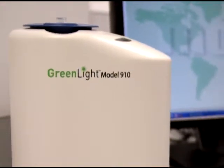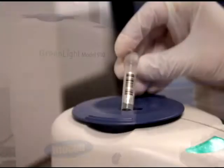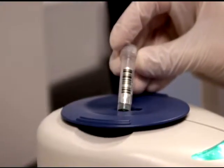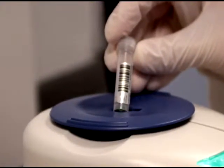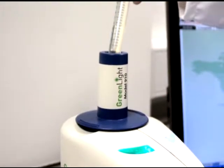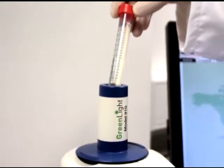The Greenlight 910 is the little brother of the 960. It is capable of using two different size vials. The 1.5 milliliter vial is used for food homogenates. The 15 milliliter vial is used for environmental hygiene swabs and dairy samples.